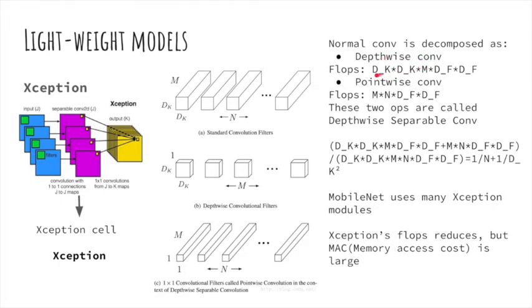For depth-wise conv, it is dk times dk, which is the size of the kernel, and then times input channel, then times the size of the feature map. And for point-wise conv, it is m times n times the size of the feature map. And these two ops together are called depth-wise separable conv. And when you divide this by the normal conv, it is 1 divided by n plus 1 divided by dk squared. It's definitely smaller than 1. The accuracy is similar, but the number of parameters is much smaller.